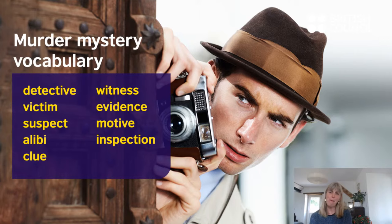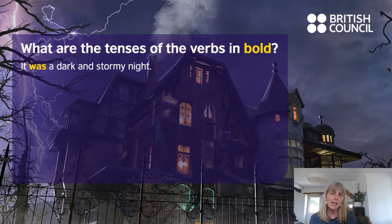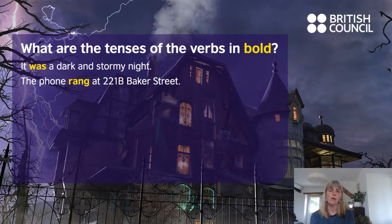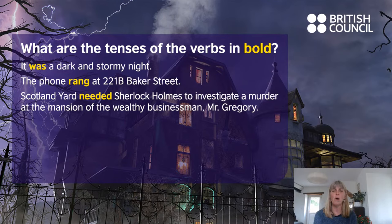So that's our murder mystery vocabulary. And we've got a little story for you today. This is the introduction to the story. Now, this story wasn't written by Arthur Conan Doyle — it's not an actual Sherlock Holmes story; we've just written it for you to have a little bit of fun with the grammar. Can you listen to the beginning of the story and tell me what are the tenses of the verbs in bold? It was a dark and stormy night. The phone rang at 221B Baker Street. Scotland Yard needed Sherlock Holmes to investigate a murder at the mansion of the wealthy businessman, Mr. Gregory.